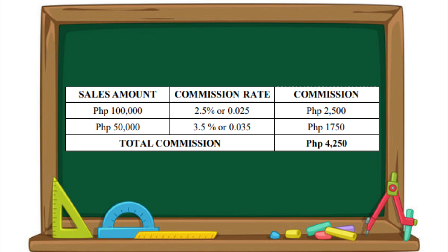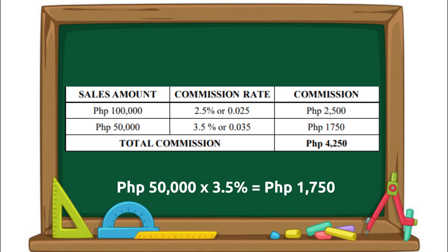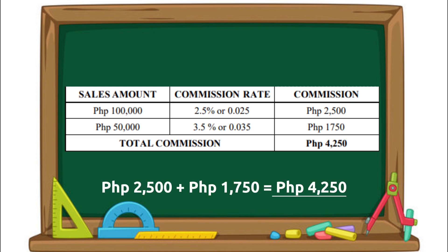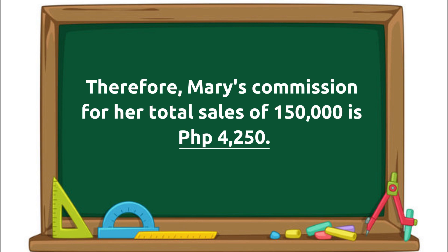Now let's solve for Mary's commission on her excess sales. The commission rate increases as the person makes more sales. So, 50,000 pesos multiplied by 3.5% is 1,750 pesos. Adding 2,500 pesos and 1,750 pesos gives 4,250 pesos. Therefore, Mary's total commission for her sales of 150,000 pesos is 4,250 pesos.